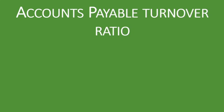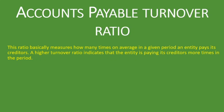So what is accounts payable turnover ratio? This ratio basically measures how many times on average in a given period an entity pays its creditors. A higher turnover ratio indicates that the entity is paying its creditors more times in the period. That is accounts payable turnover ratio.